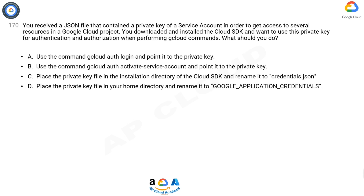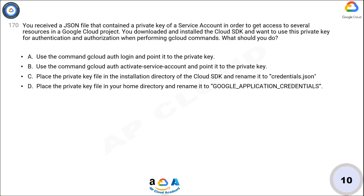B: Use the command 'gcloud auth activate-service-account' and point it to the private key. C: Place the private key file in the installation directory of the Cloud SDK and rename it to 'credentials.json'. D: Place the private key file in your home directory and rename it to 'GOOGLE_APPLICATION_CREDENTIALS'. Now take 10 seconds to think about it.